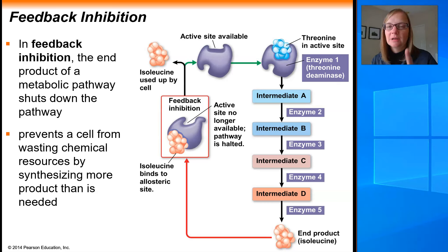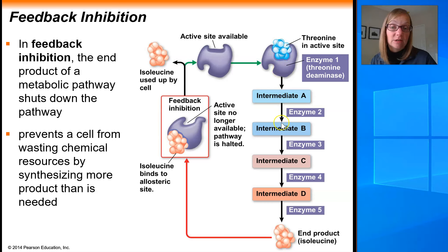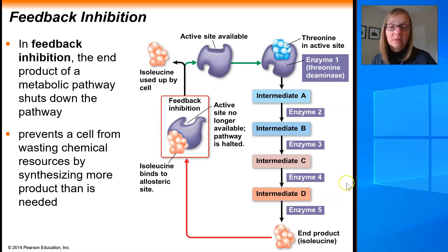What kind of inhibitor is it functioning as — competitive or non-competitive? It's non-competitive, because non-competitive inhibitors bind to another place, not the active site, and inhibit the enzyme's function. If you have a lot of isoleucine, the more frequently it will inactivate the threonine deaminase, so you won't make excessive amounts of isoleucine because you've inactivated that very first step of the pathway. But as the cell continues to use up the isoleucine, its concentration falls, less frequently does it interact with the threonine deaminase, and the enzyme can be turned back on, replenishing the isoleucine. This prevents a cell from wasting chemical resources by creating more product than it can use at that given moment.